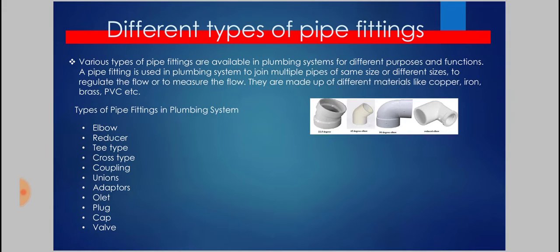A pipe is a straight structure, but in a house, which is a rectangular structure, we need to reach different locations. So we need some kind of bent connections, and to overcome that situation we use fittings — components that allow the safe movement of water. The types of pipe fittings in plumbing systems include: elbow, reducer, T-joint, cross type, coupling, union, adapters, Olet, plug, cap, and valve. In this video we will cover the important ones.